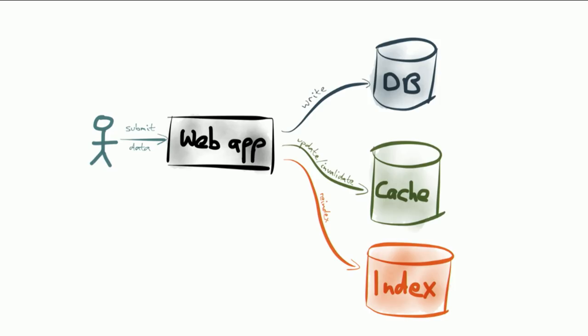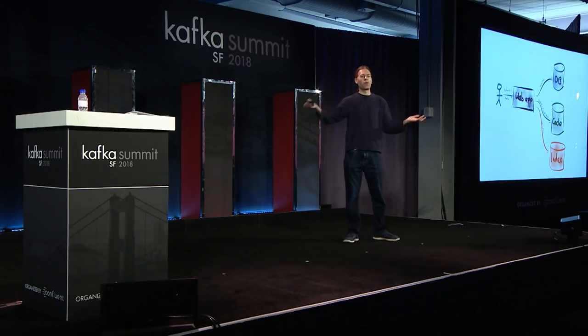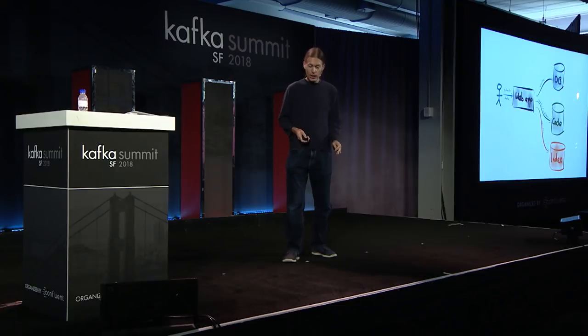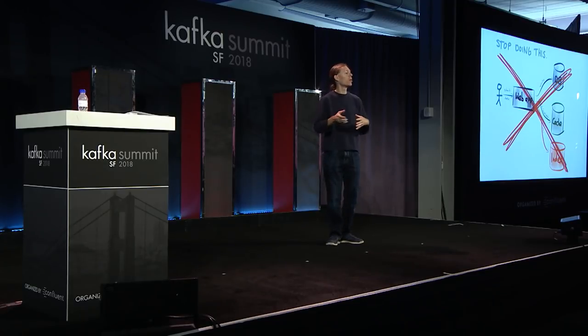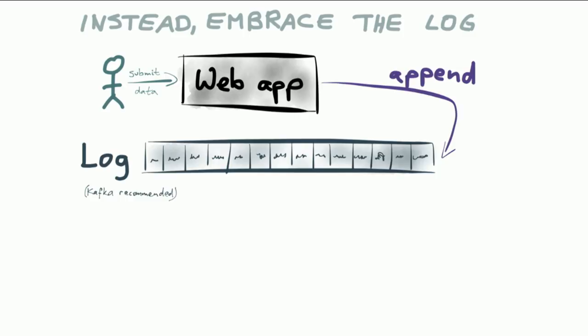Which is nice in theory, except in practice? Most of these systems actually don't support two-phase commit. If you take Redis or Elasticsearch as examples, they do not support XA transactions — there's no support for the Java Transaction API or your favorite distributed transaction system. Moreover, even in systems that do support distributed transactions, the performance tends to be pretty bad. The operational problems are pretty bad too, because it just takes one system running slightly slow and the whole rest of the system grinds to a halt.